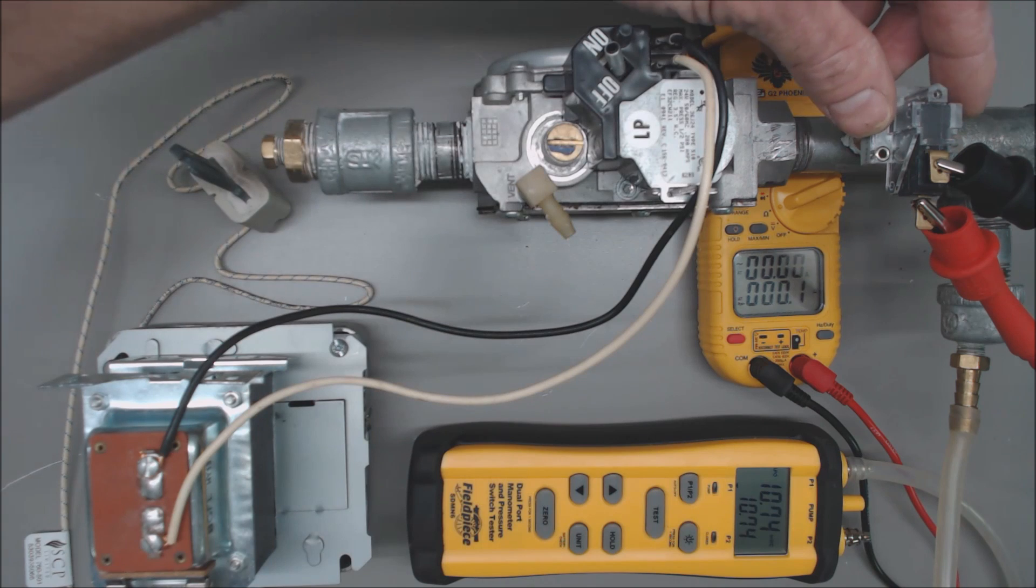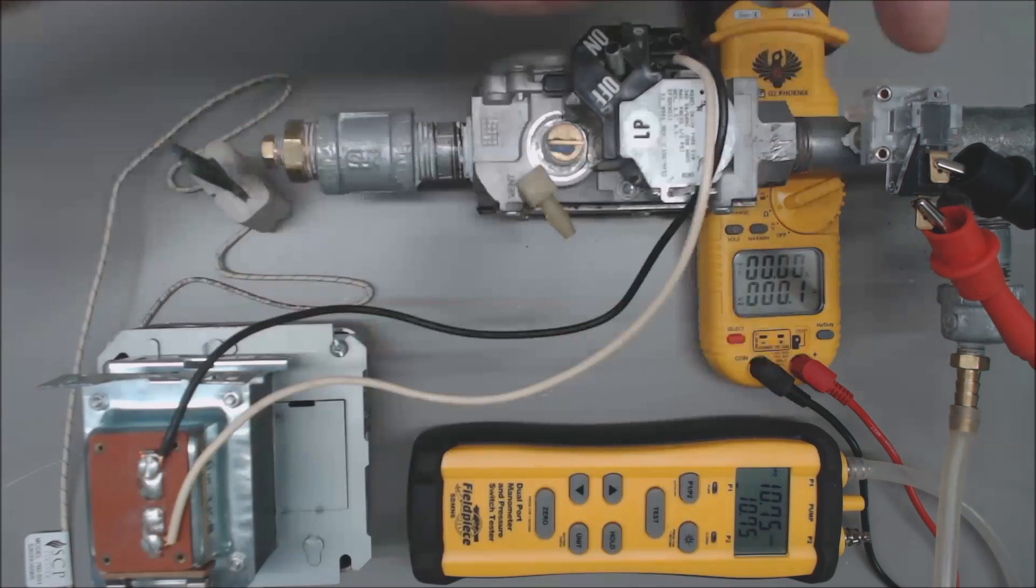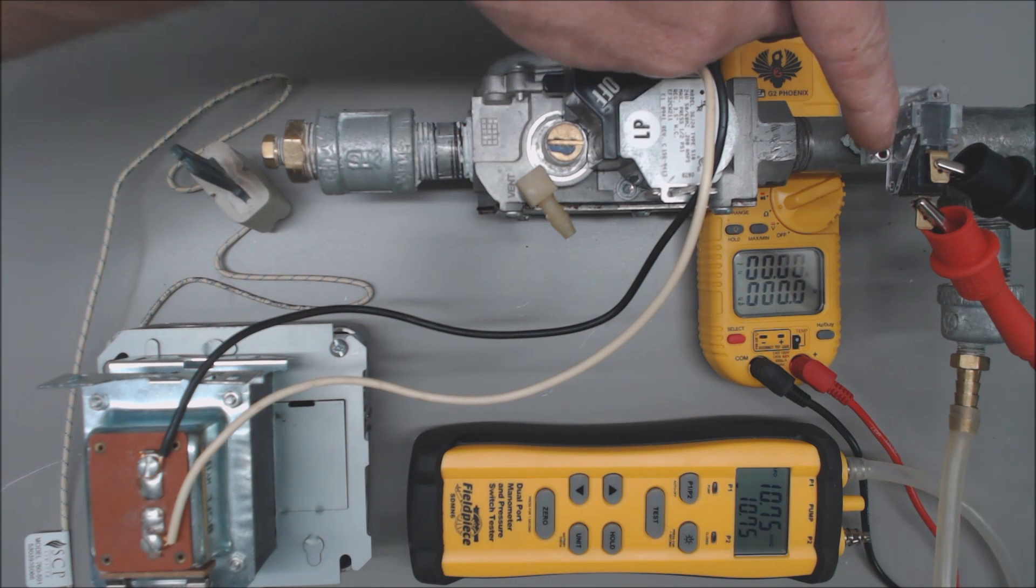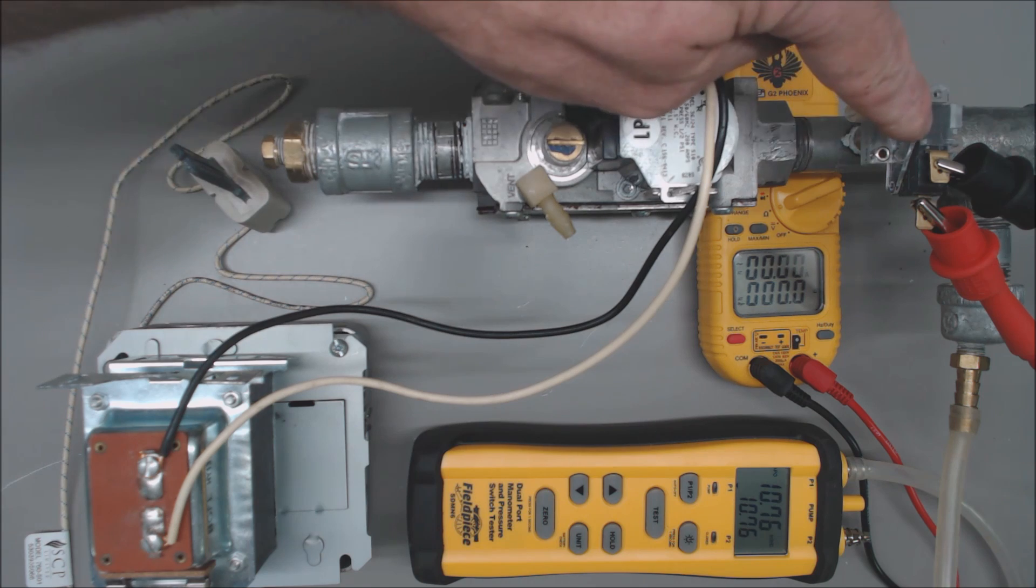So this pressure switch will end up opening the electrical circuit if the pressure goes down past a certain level which is factory set. All right, so we're going to determine what that level is and then we're also going to watch the flame as the flame comes back after we do our initial test.